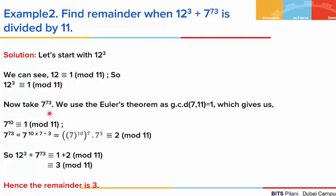Now let's move on to the next part, 7 to the power 73. Here also we can use Euler's theorem since GCD of 7 and 11 is 1. This gives us 7 to the power 10, because φ(11) is 10, which is congruent to 1 mod 11. We write 7 to the power 73 as 7 to the power 10, raised to the power 7, multiplied by 7 to the power 3 — since 10 times 7 is 70, plus 3 gives 73. From Euler's theorem the first part is congruent to 1, so we are left with 7 to the power 3, which is congruent to 2 mod 11.